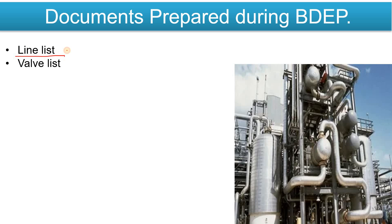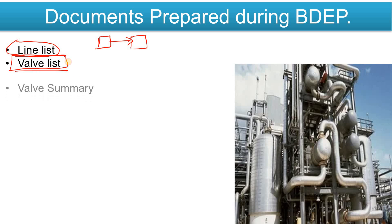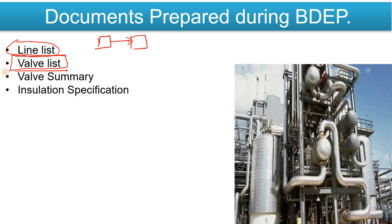Then we prepare the Line List and the Valve List. In the Line List we provide information about each line — where each line is coming from and where it is going. Each line has a different name and code, and from the Line List you can get information about the MOCs. With the help of the P&ID, the Valve List is prepared, and from the Valve List, the Valve Summary is prepared — covering how many valves to purchase, what type, and what end connections.